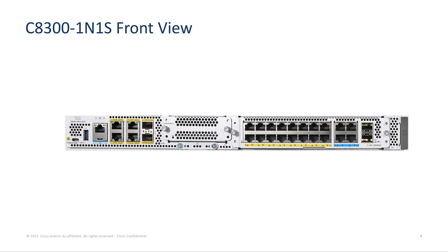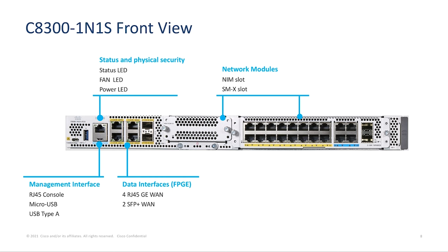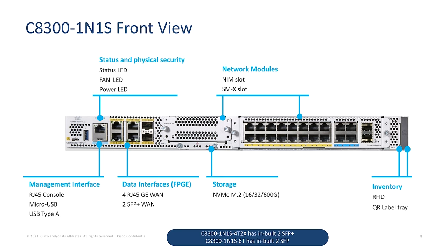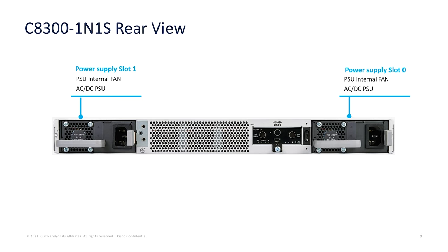Here is a closer look at the 8300 1 rack unit chassis. It has status LEDs, management console ports and USB for additional storage, 6 WAN ports on the front for port density, 1 NIM and 1 SM slot for modularity, a built-in slot for M.2 external storage, and an RFID and QR label tray for advanced inventory management. The 60 and 42X models are of the same design except for 10G support on the WAN port. On the rear side, there are two highly efficient power supplies, a built-in pluggable slot for cellular WAN access, and a fixed fan tray with three internal fans for chassis cooling.